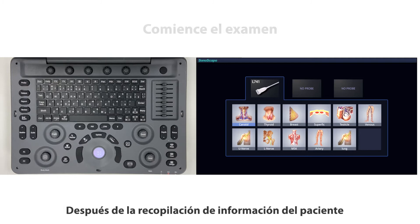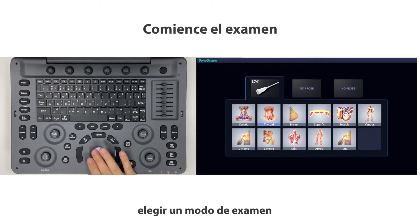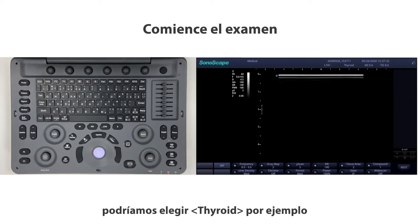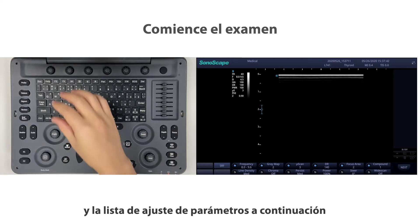After patient information collection, begin the exam by choosing an exam mode. Here is the exam mode display — choose thyroid, for example. It enters B-Mode live scanning, with the image area displayed in the middle of the monitor and the parameter adjustment list below.